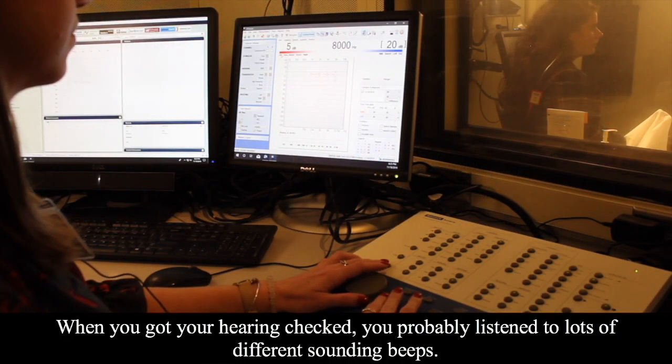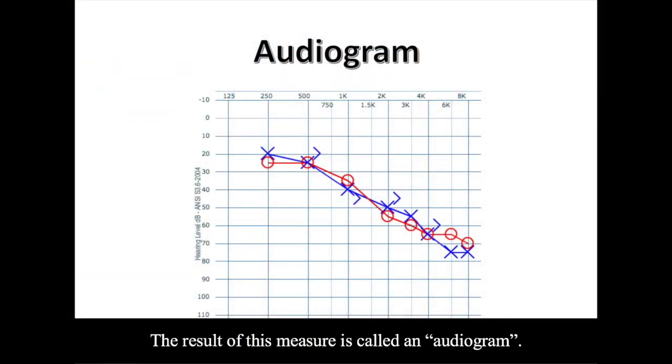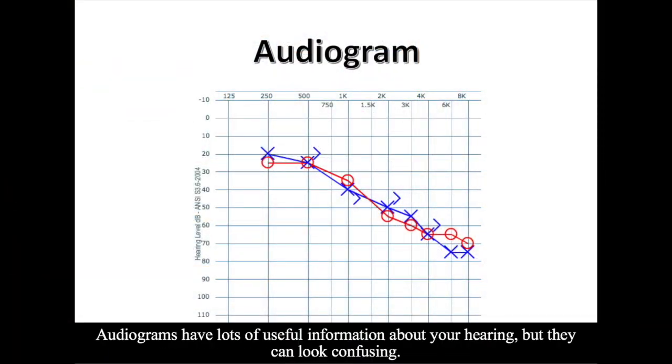When you got your hearing checked, you probably listened to lots of different sounding beeps. The result of this measure is called an audiogram. Audiograms have lots of useful information about your hearing, but they can look confusing.